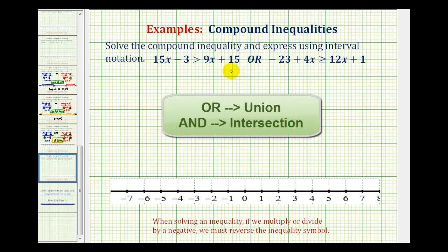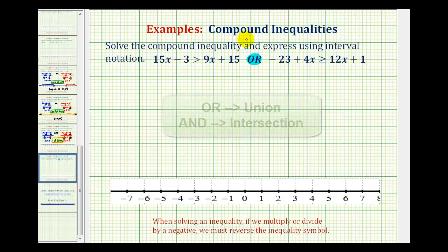Notice in this example the two inequalities are connected by the word or, which means the solution will consist of all the values that satisfy this inequality or the ones that satisfy this inequality. We'll be combining the solutions of these two inequalities, and the word or also means union, so we'll be combining the two solution sets.